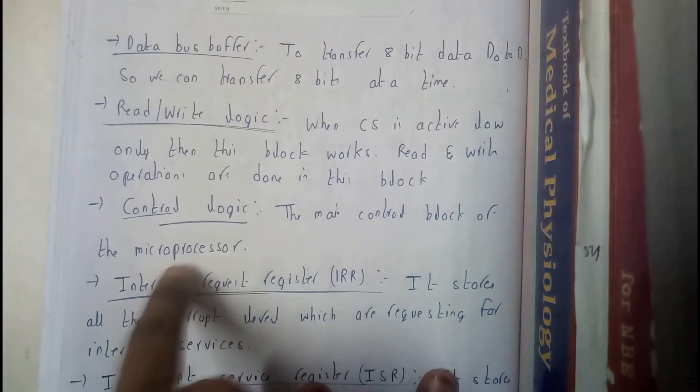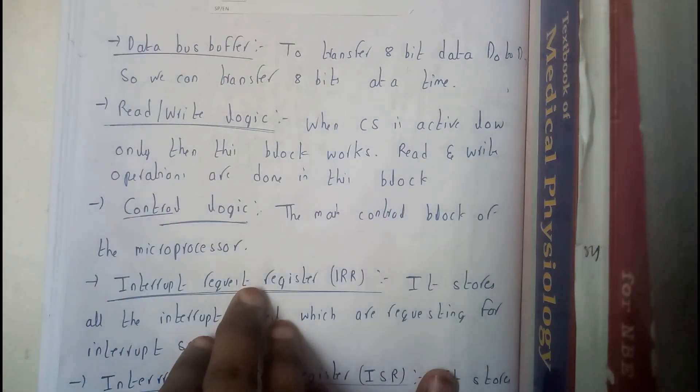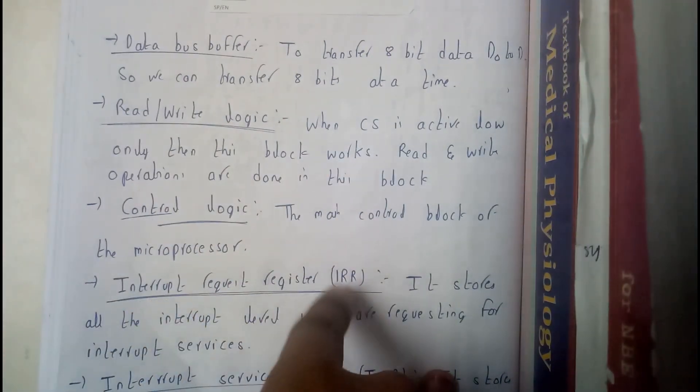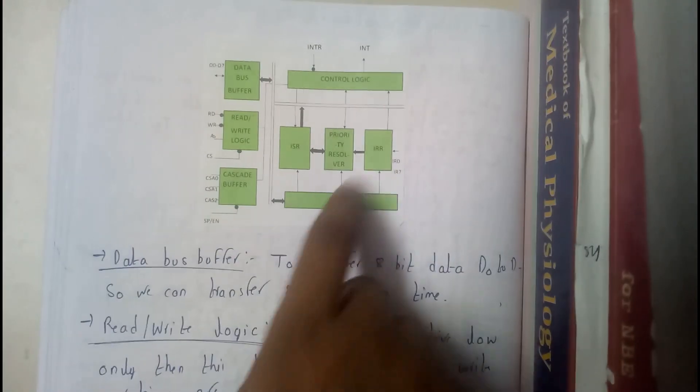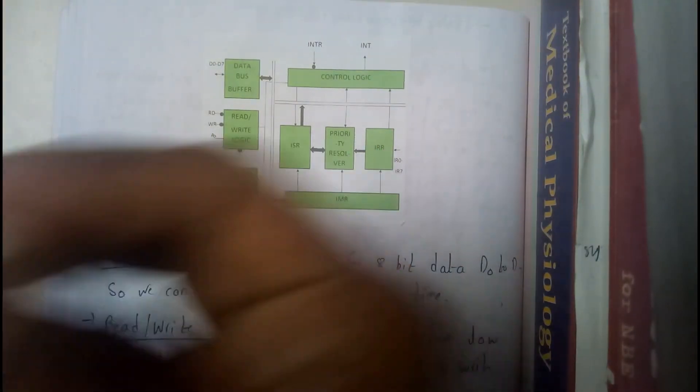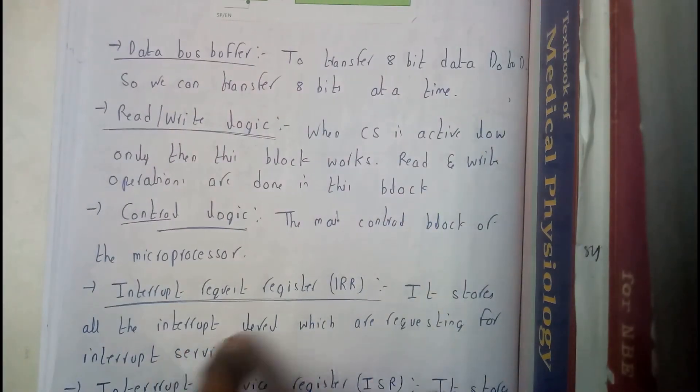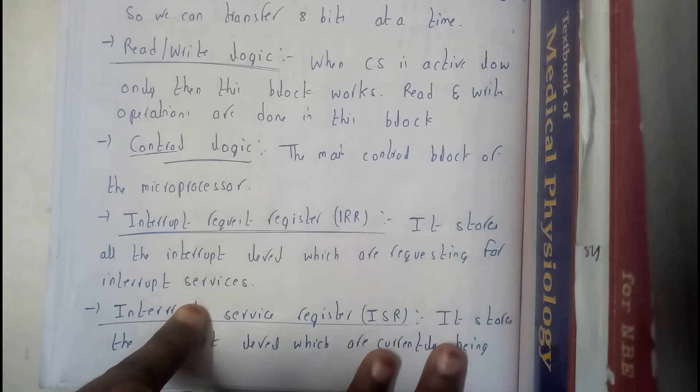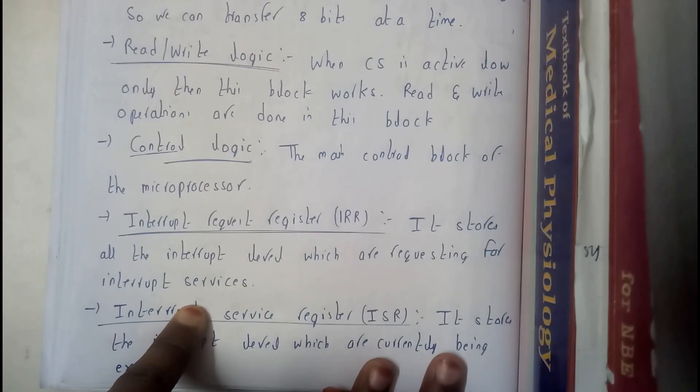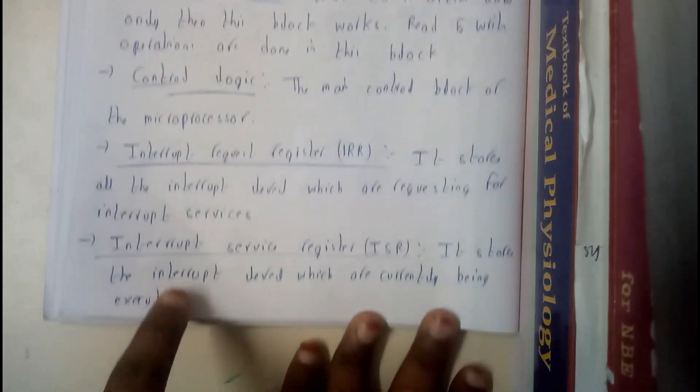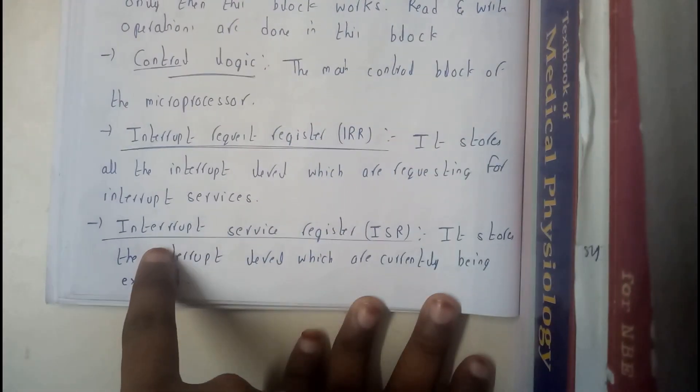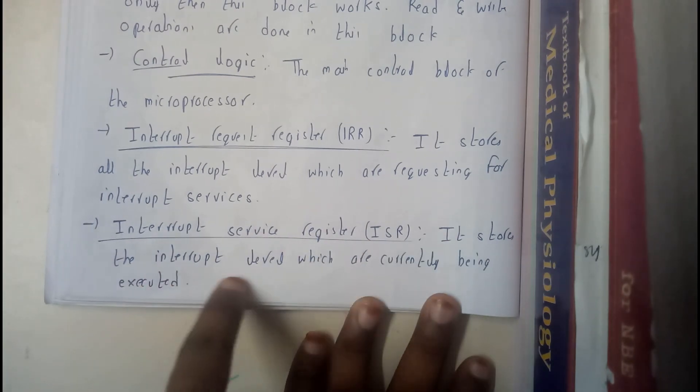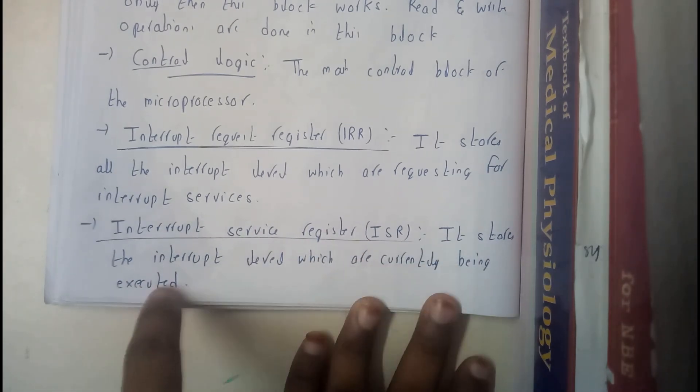So now let us go through control logic. The main control block of the microprocessor is nothing but the control logic. IRR - it takes the input as interrupt requests from 0 to 7. It stores all the interrupt levels which are requested for interrupt services, from IR0 to IR7. ISR is nothing but interrupt service register. It stores the interrupt level which are currently being executed.